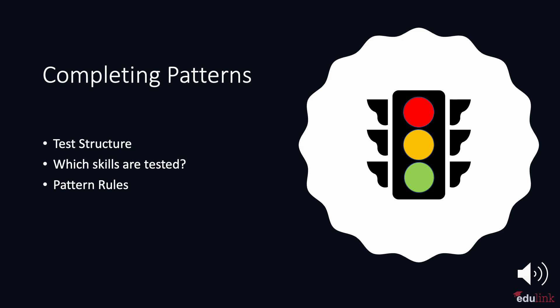A pattern is something that happens in a regular and repeated way. Here on the slide, we have a traffic light as an example. Traffic lights follow a pattern. The light turns red, then green, then yellow, then red again.